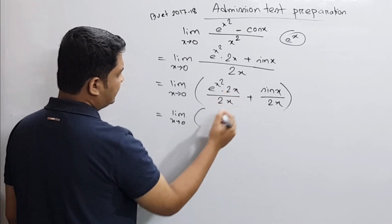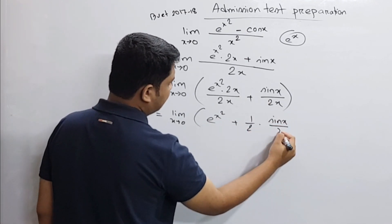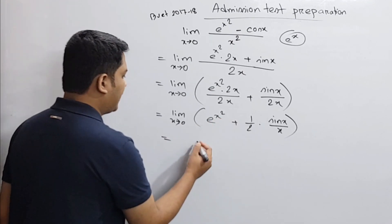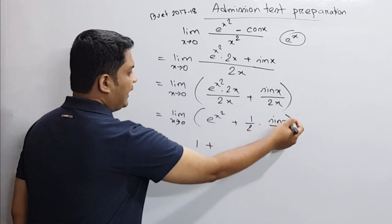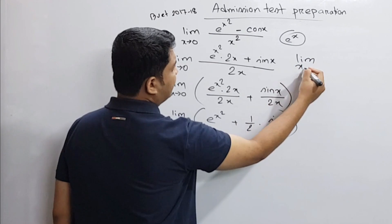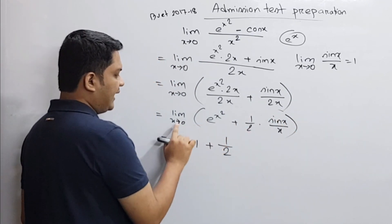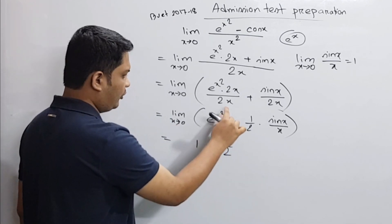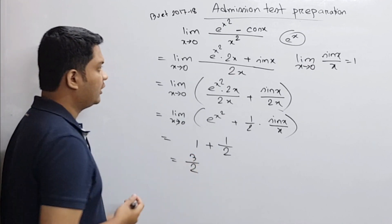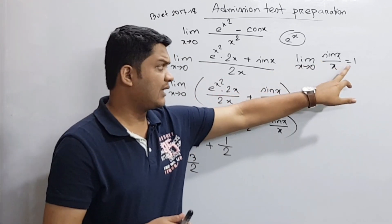x squared into 2x divided by 2x, plus sin x divided by 2x. So limit x tends to 0 gives us 1 plus half into sin x divided by x, plus half. Now limit x tends to 0 of sin x divided by x equals 1, so 2 to the power 0 is equal to 1.